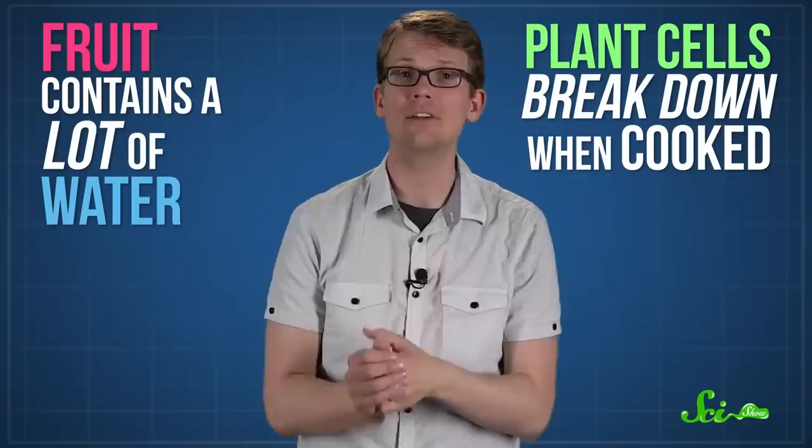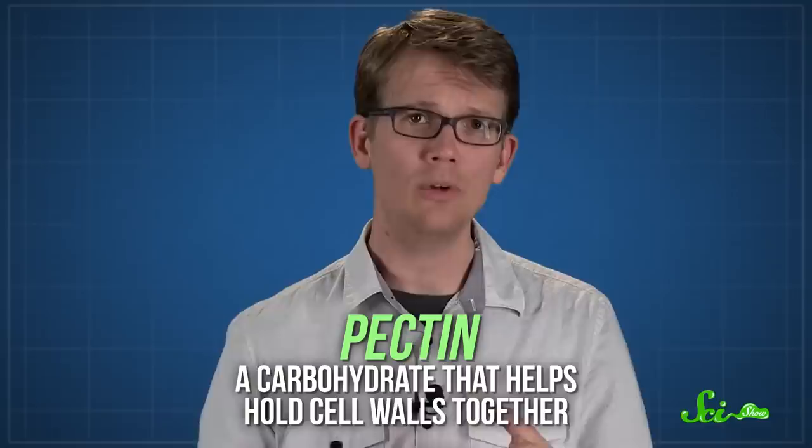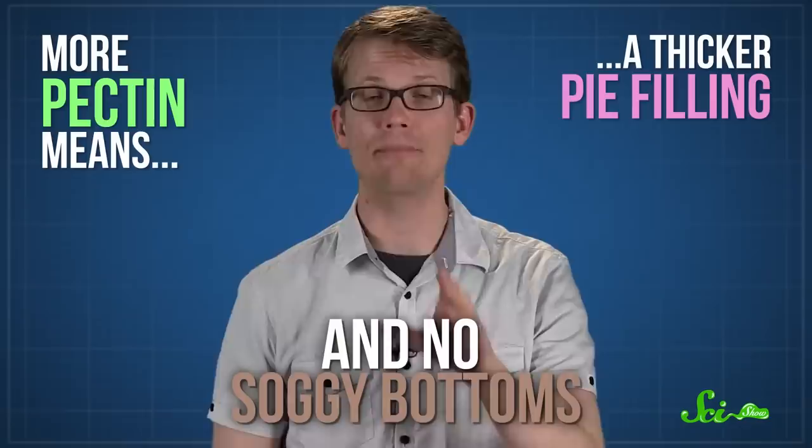Then there's the filling, which you probably don't want getting all runny and soggy. Problem is, fruit has a lot of water in it, and plant cells tend to break down when you cook them, and that lets the water loose inside your pie. One ingredient that can help keep the water from escaping is something that occurs naturally in the fruit itself, a carbohydrate called pectin, which normally helps hold cell walls together. In pie filling, pectin will form a jelly-like mesh that holds water in place. So more pectin means a thicker pie filling, which in turn means a pie bottom that is less soggy.